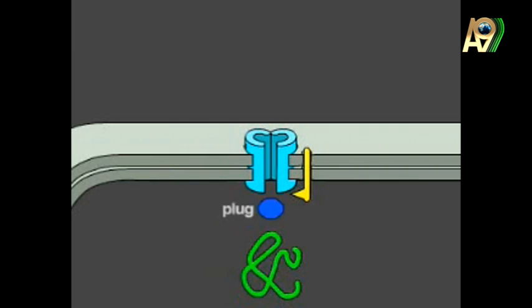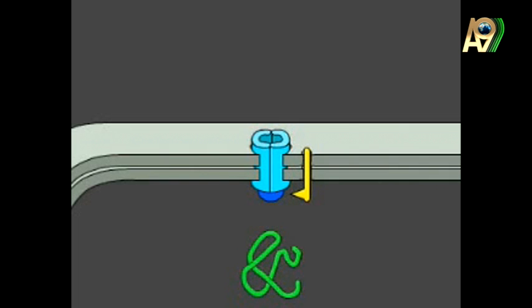When the job of translocation protein is done, a plug comes and closes the lower end of the channel. Also, this plug is a protein.